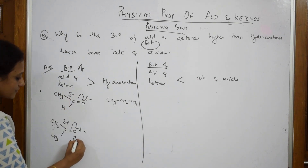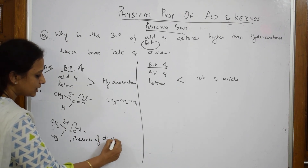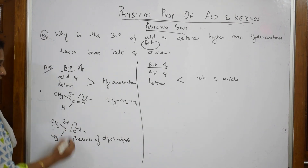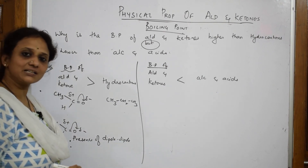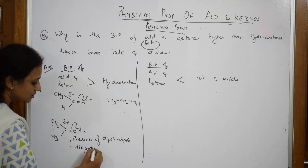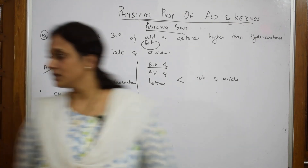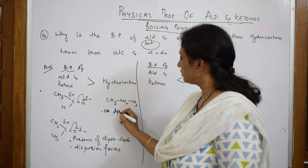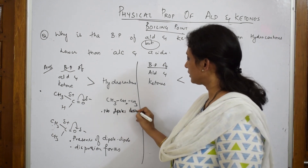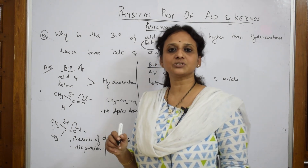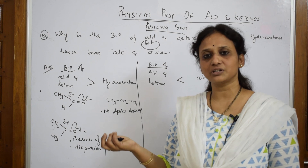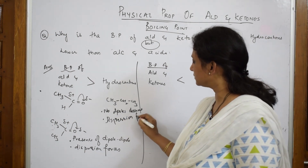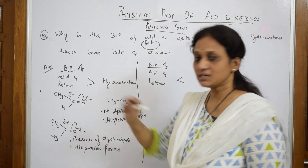For aldehydes and ketones, the first important force acting is dipole-dipole interaction — the formation of two poles — and they also show dispersion forces. These two are important factors for boiling point. For hydrocarbons, no dipole is observed. When there is no dipole, there is no attraction towards water molecules, making it very difficult to boil. Hydrocarbons only show dispersion forces, which is the key difference.